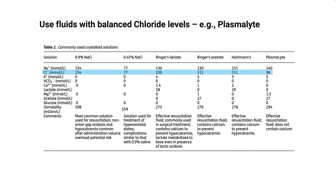The next important thing to remember is the amount of chloride present in any solution. Normal chloride in human beings is 105 mEq/L, and you can see that normal saline has 154 mEq/L of chloride. So this is a hyperchloremic solution and can cause more acidosis, as compared to Ringer's lactate and Plasma-Lyte, which are more chloride balanced.